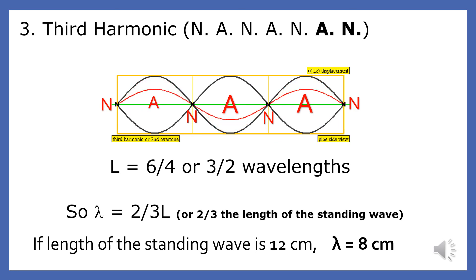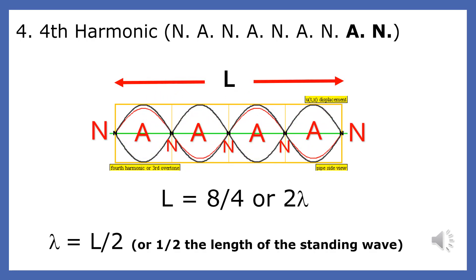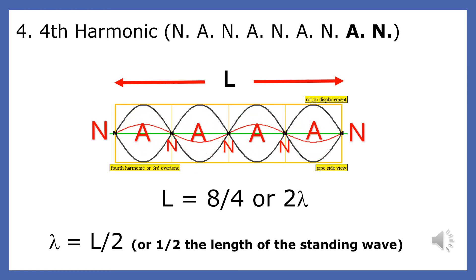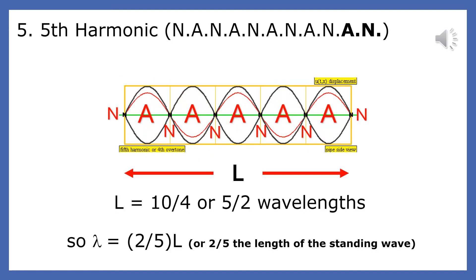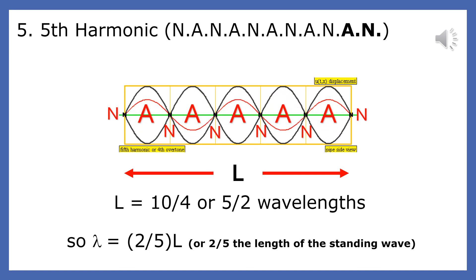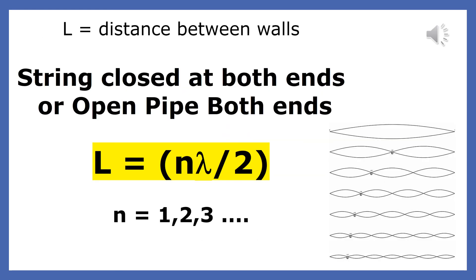The pattern seen in the previous example continues. The fourth harmonic is created by a source vibrating at four times the frequency of the fundamental. The standing wave also has four antinodes. Since it is two wavelengths wide, the wavelength is exactly one-half the length of the standing wave. The fifth harmonic is created by a source vibrating at five times the fundamental frequency. The standing wave has five antinodes. Since it is five-halves wavelengths wide, the wavelength is exactly two-fifths of the length of the standing wave, or two-fifths L. The length of a standing wave closed at both ends is always a whole number multiple of a half a wavelength.